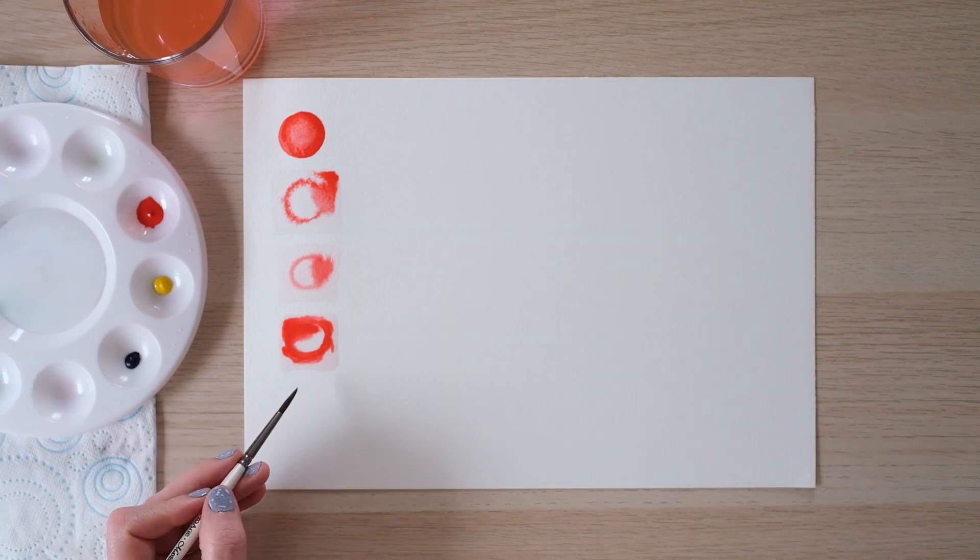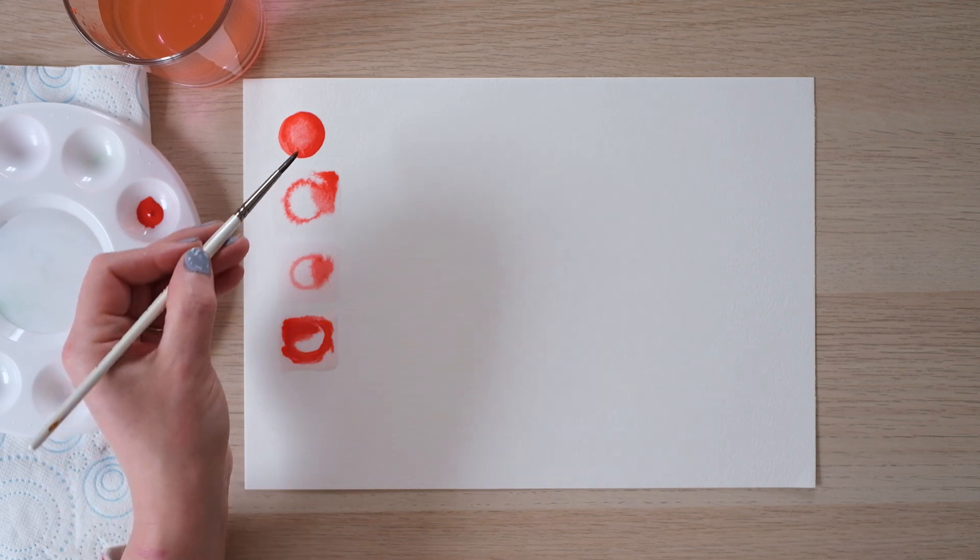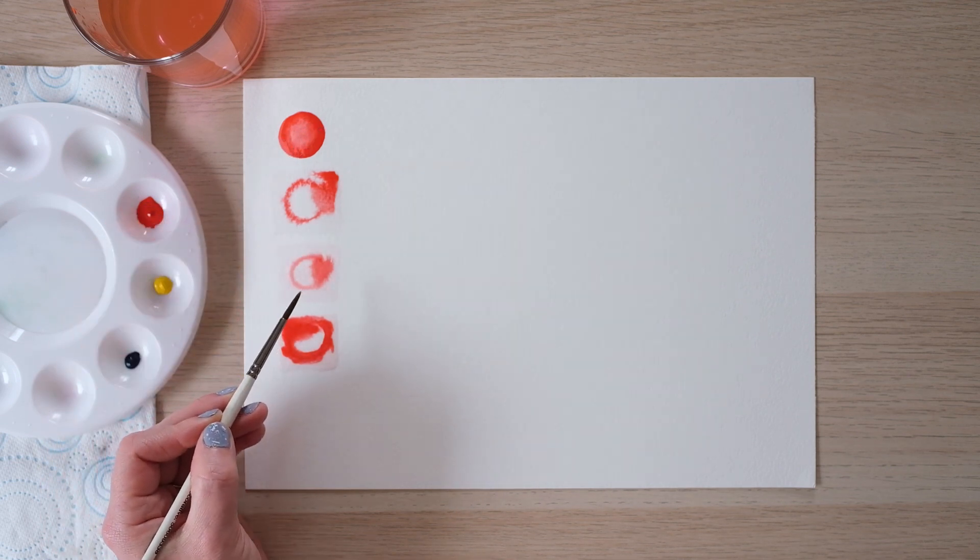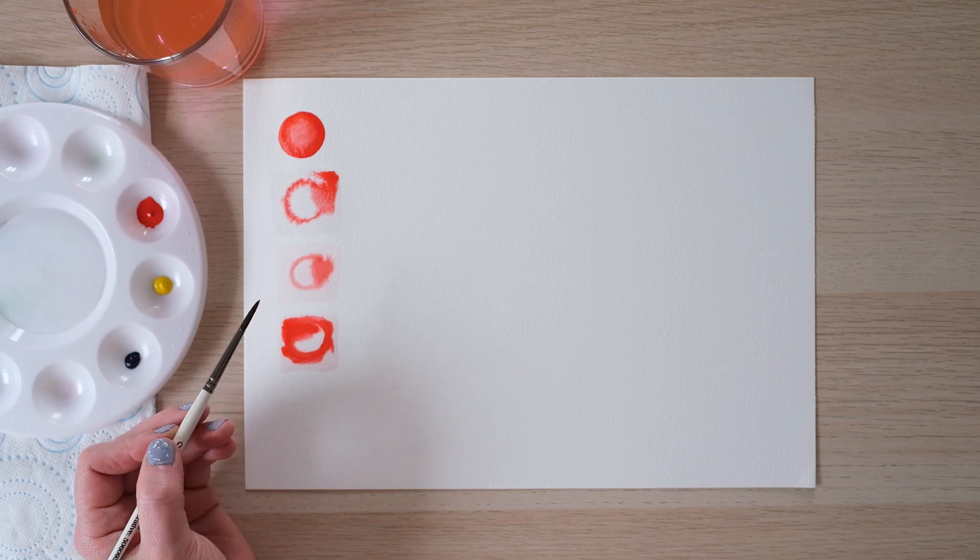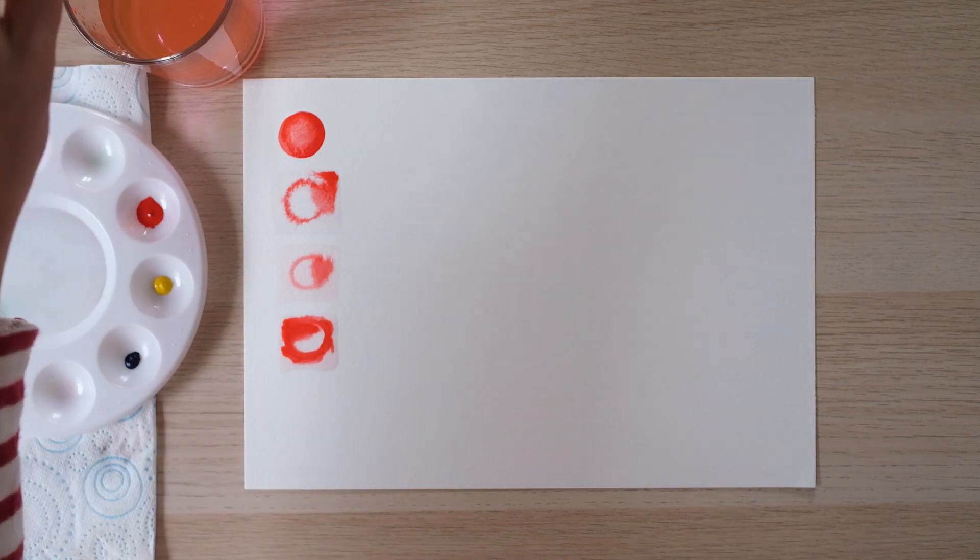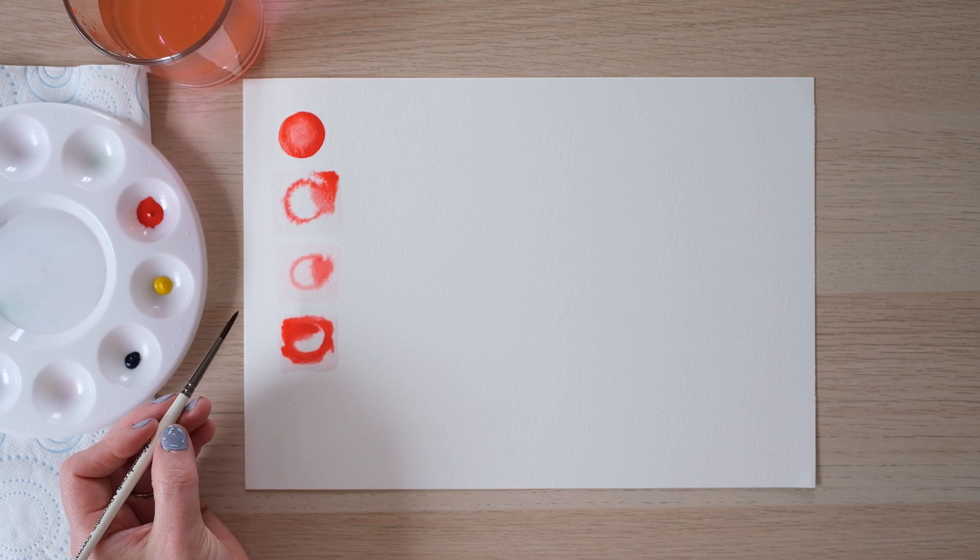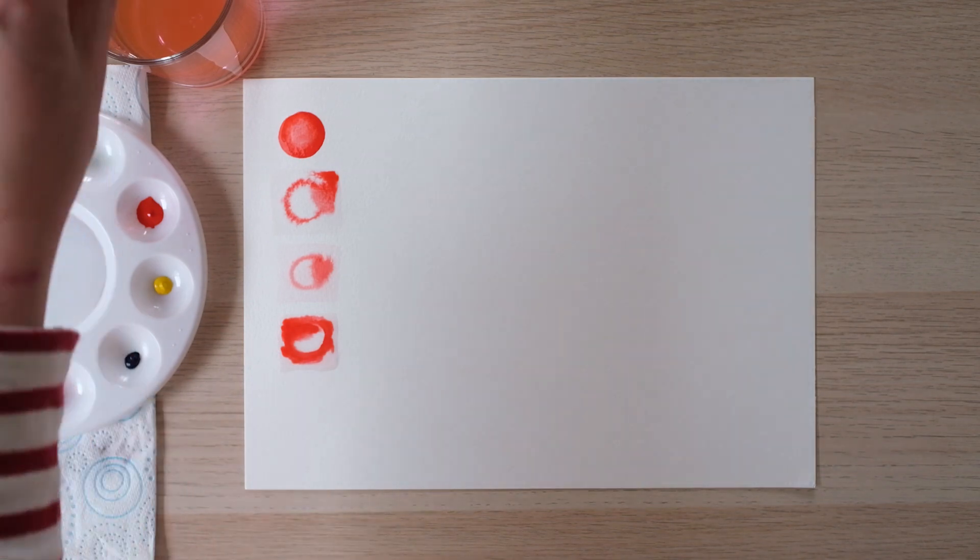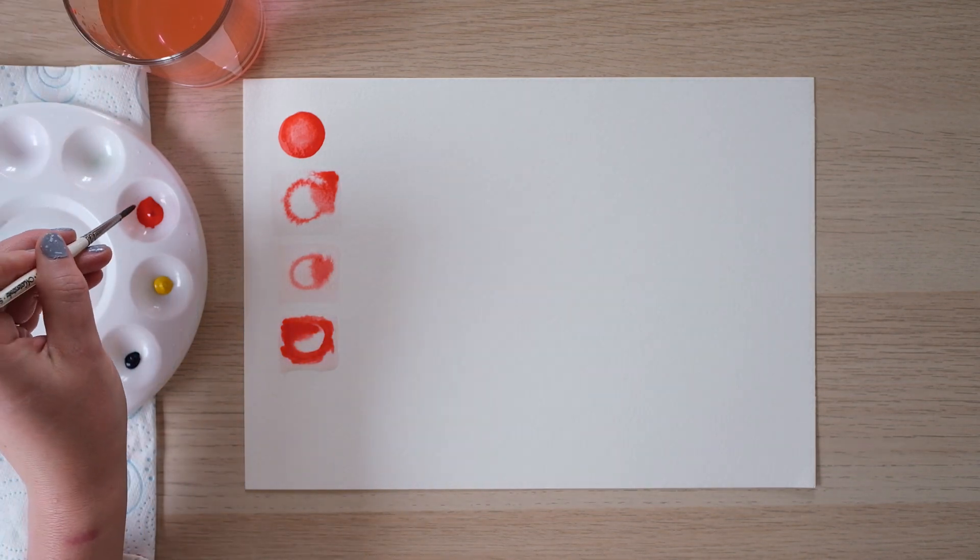So the last thing we're going to look at today is how we get from this kind of bold colour up to these lovely pale tones without having a white paint because I think in other painting mediums we use white to lighten things, well in watercolour we use water funnily enough. So the last exercise we're going to do today is we're going to get that red paint back on our brush and on a section of page that is dry.